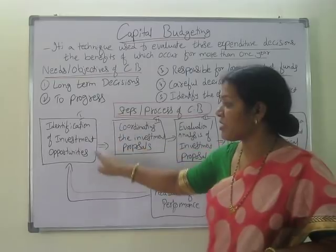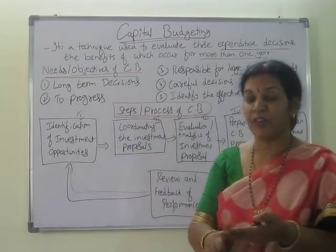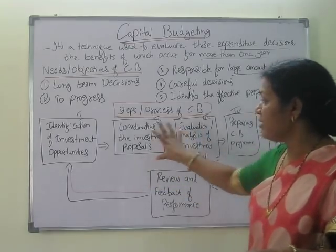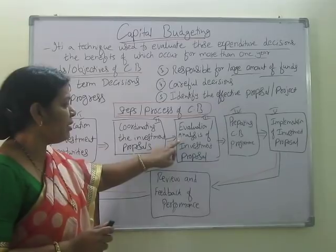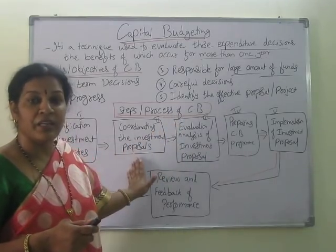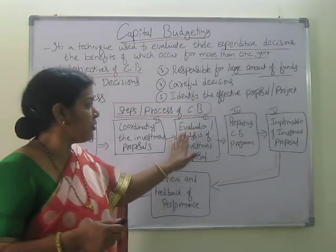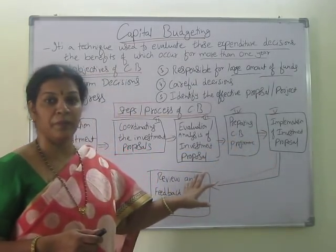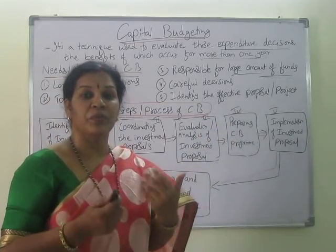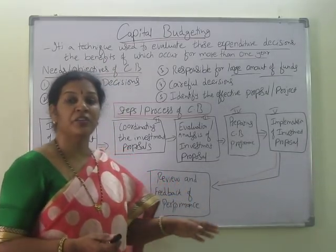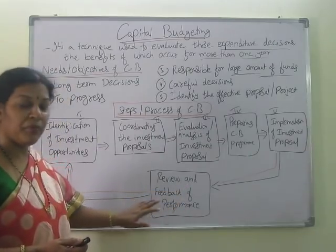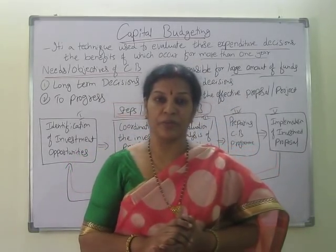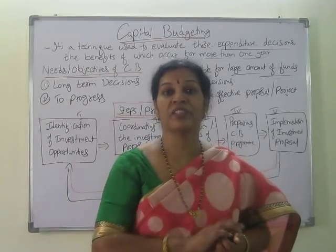To recap: first, identify investment opportunities. After identifying, coordinate the investment proposals with the finance department. Then evaluate and analyze the proposals recommended in the second step. Once evaluation is over, prepare the capital budgeting program. After that, implement the investment proposal. After implementation, review performance — whether good or bad — and send recommendations or suggestions as feedback back to the first process. This is the capital budgeting cycle for long-term investments, which carry a lot of risk.